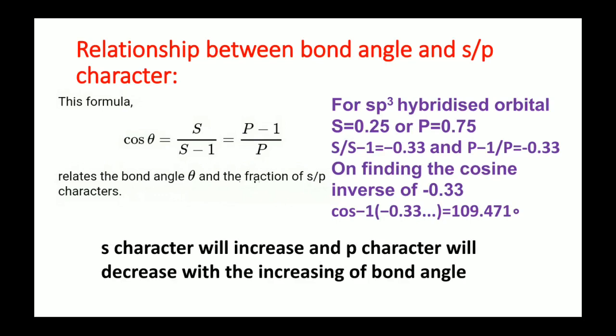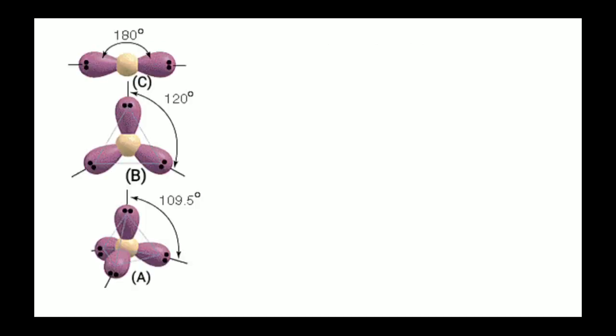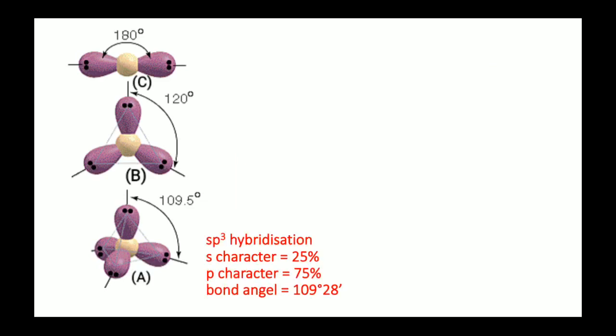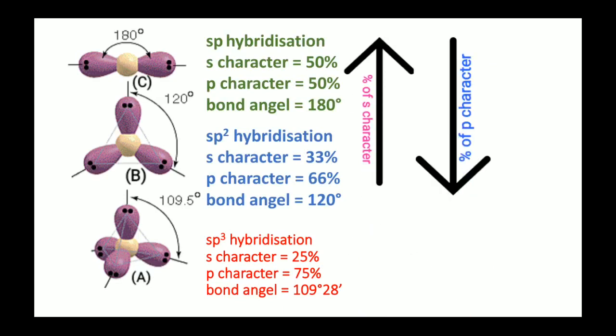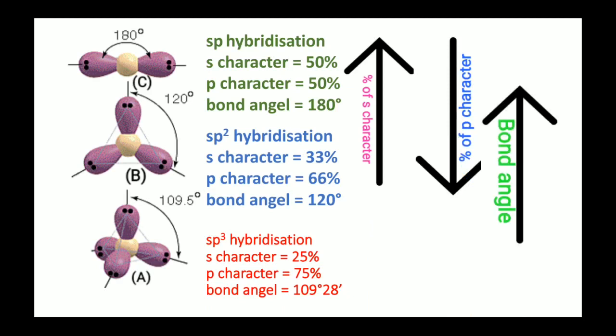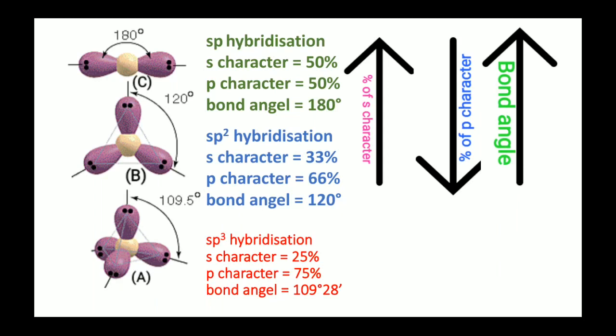Therefore, as S character increases, bond angle increases; and as P character increases, bond angle decreases. There is a parallel relationship between bond angle and S character, and an inverse relationship between P character and bond angle. You can see three pictures: A represents sp³ hybridization, B represents sp² hybridization, and C represents sp hybridization. S character increases from A to C, P character increases from C to A, and the bond angle follows the same trend as S character — increasing from A to C.